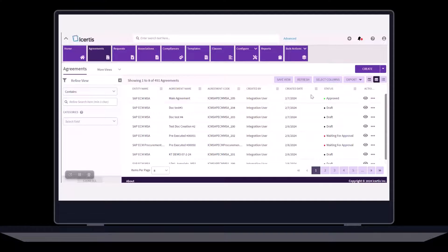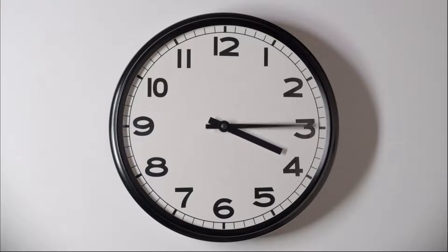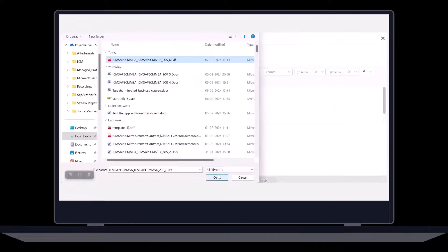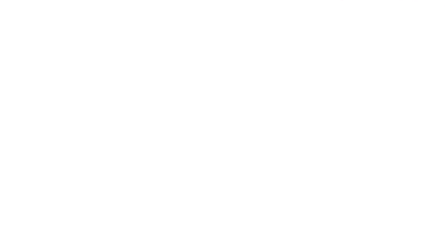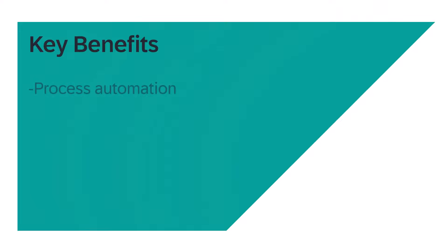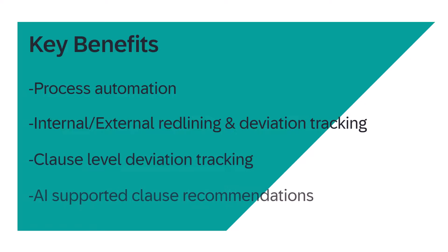Next, the document is sent for external signatures. Once the signatures are obtained, the signed document is uploaded and the agreement is executed. As you can see, there are many benefits. Besides the process automation in the area of contract authoring, ICERDIS also offers advanced capabilities including redlining by internal and external parties with deviation tracking, clause-level deviation tracking, and AI-supported clause recommendations. Stay tuned for more innovations.